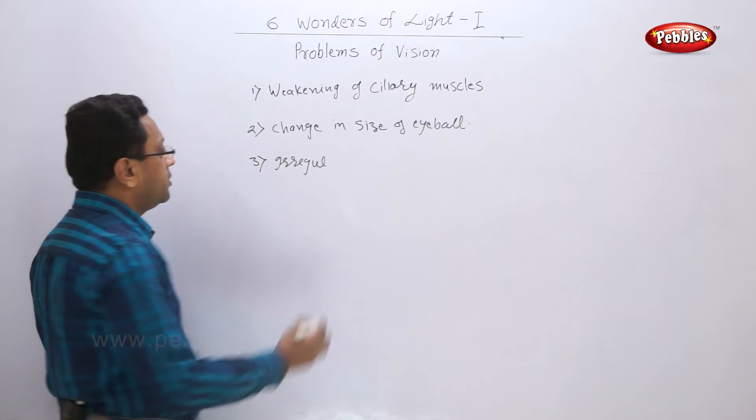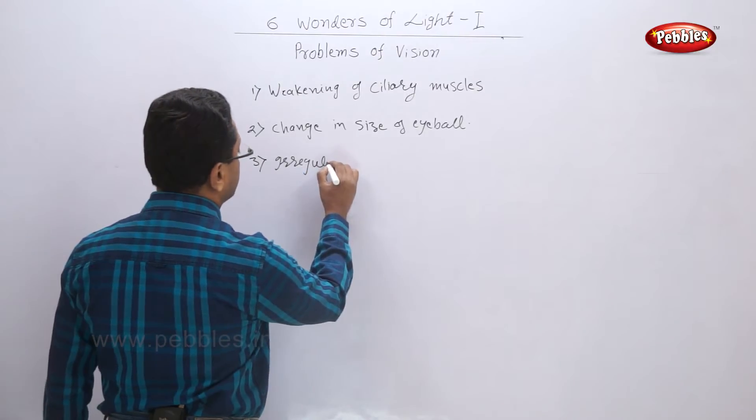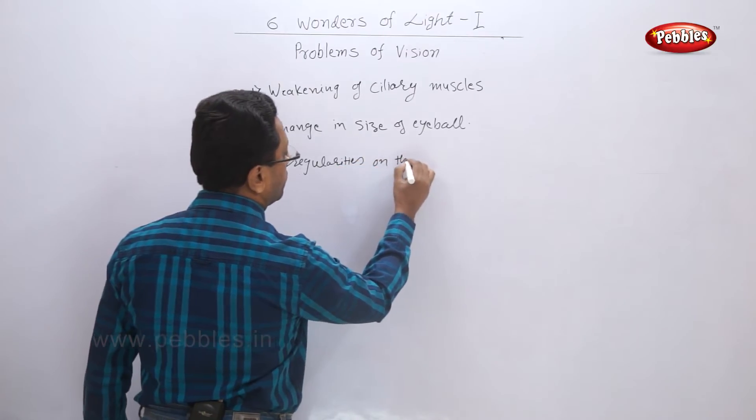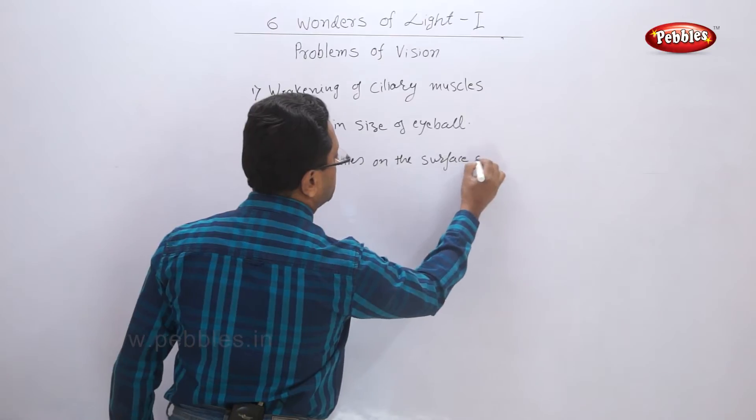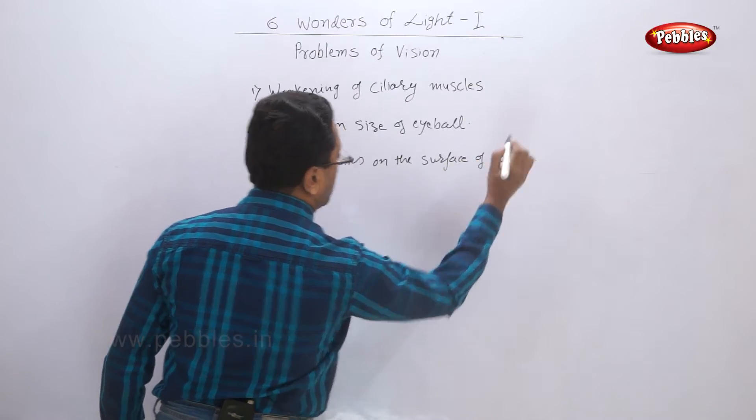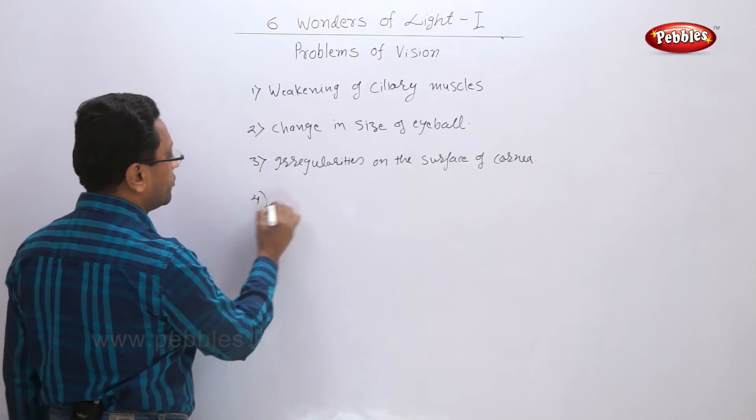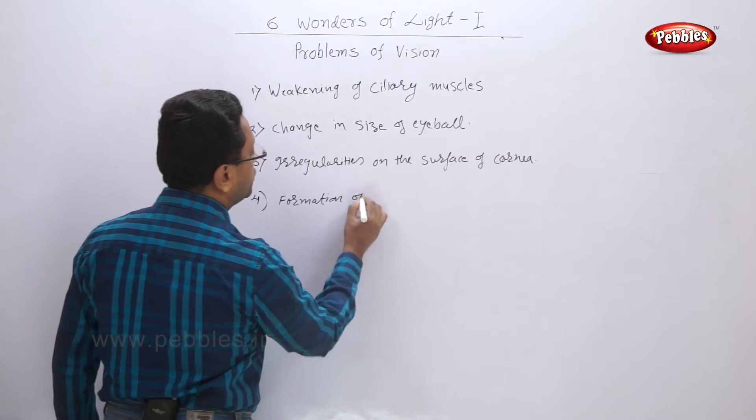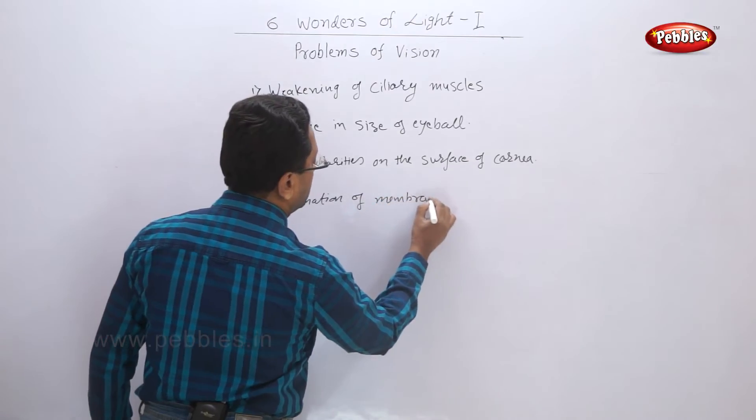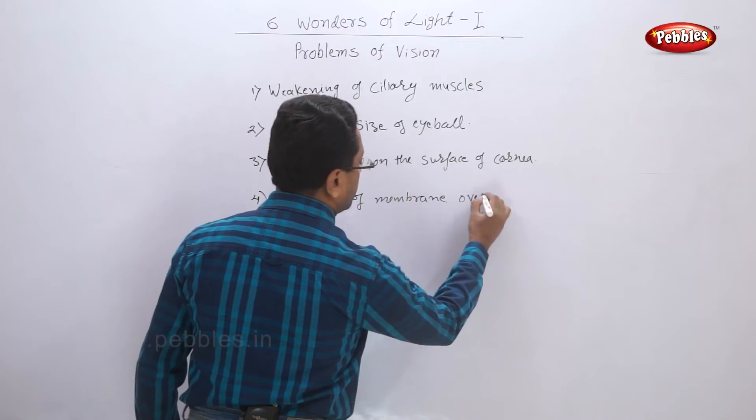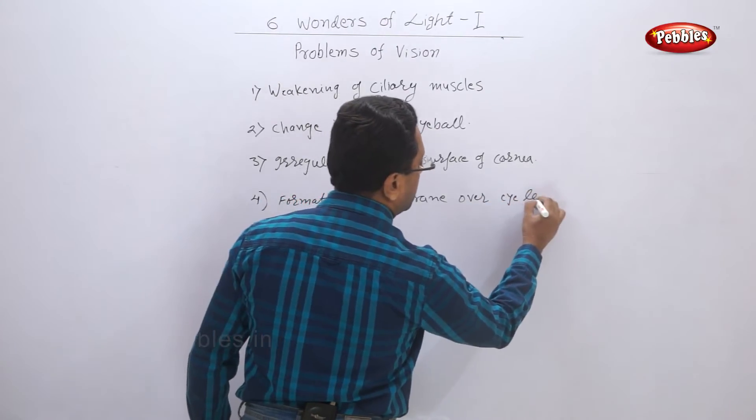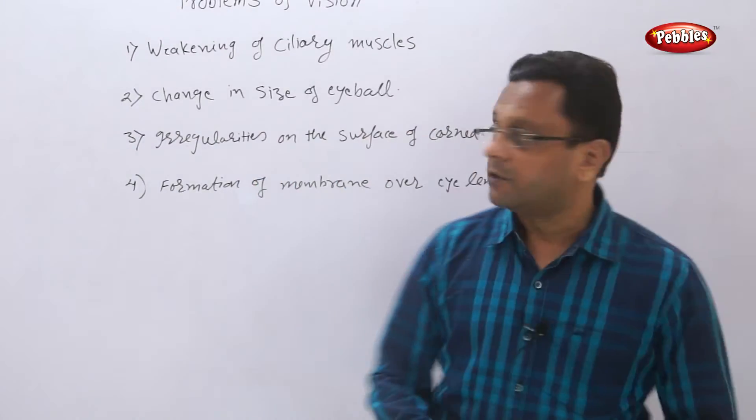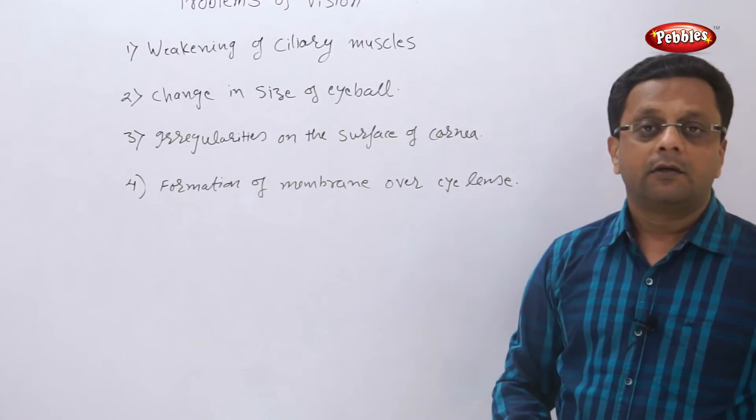Third, irregularities on the surface of cornea. Fourth, formation of membrane over eye lens. These are the main four reasons.